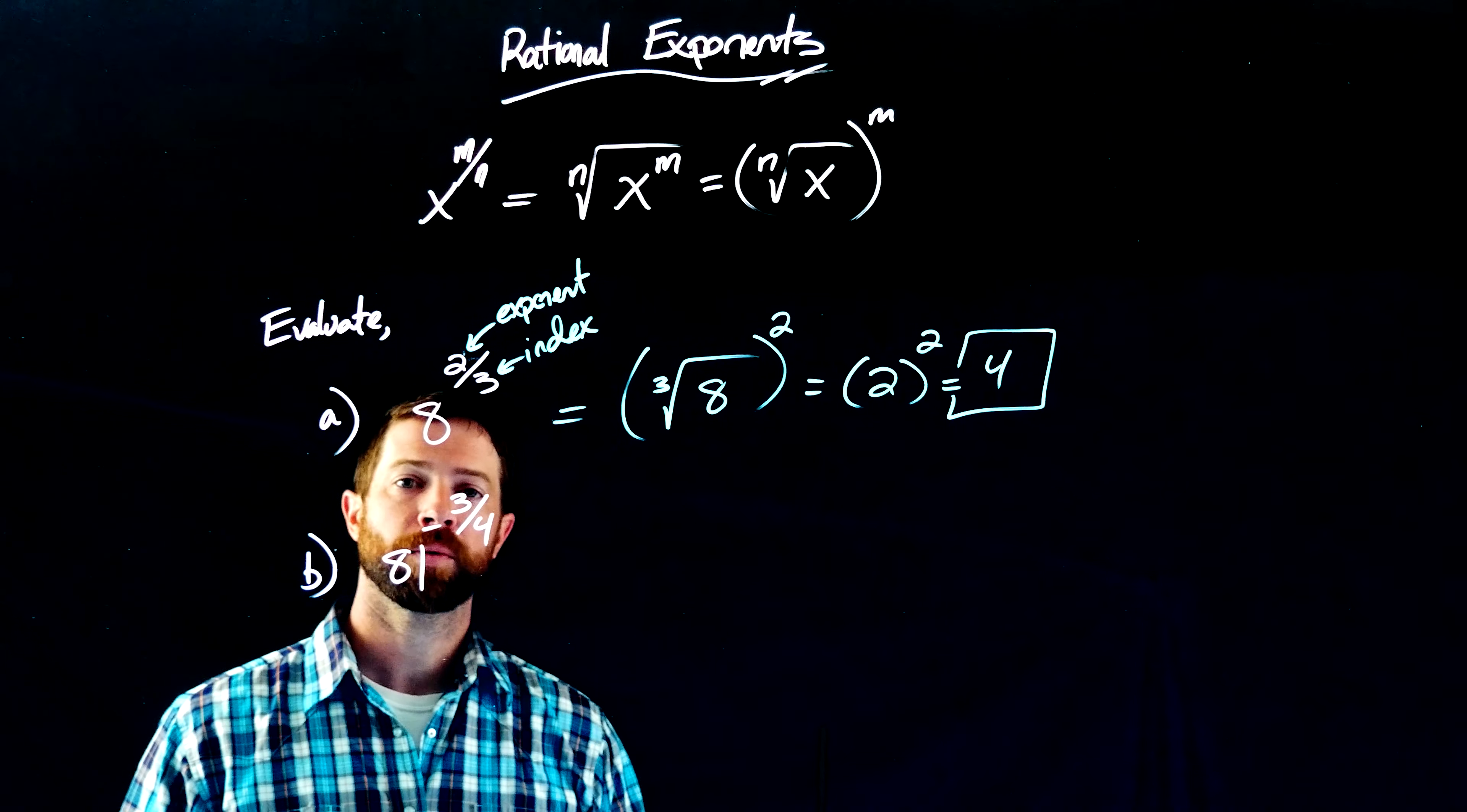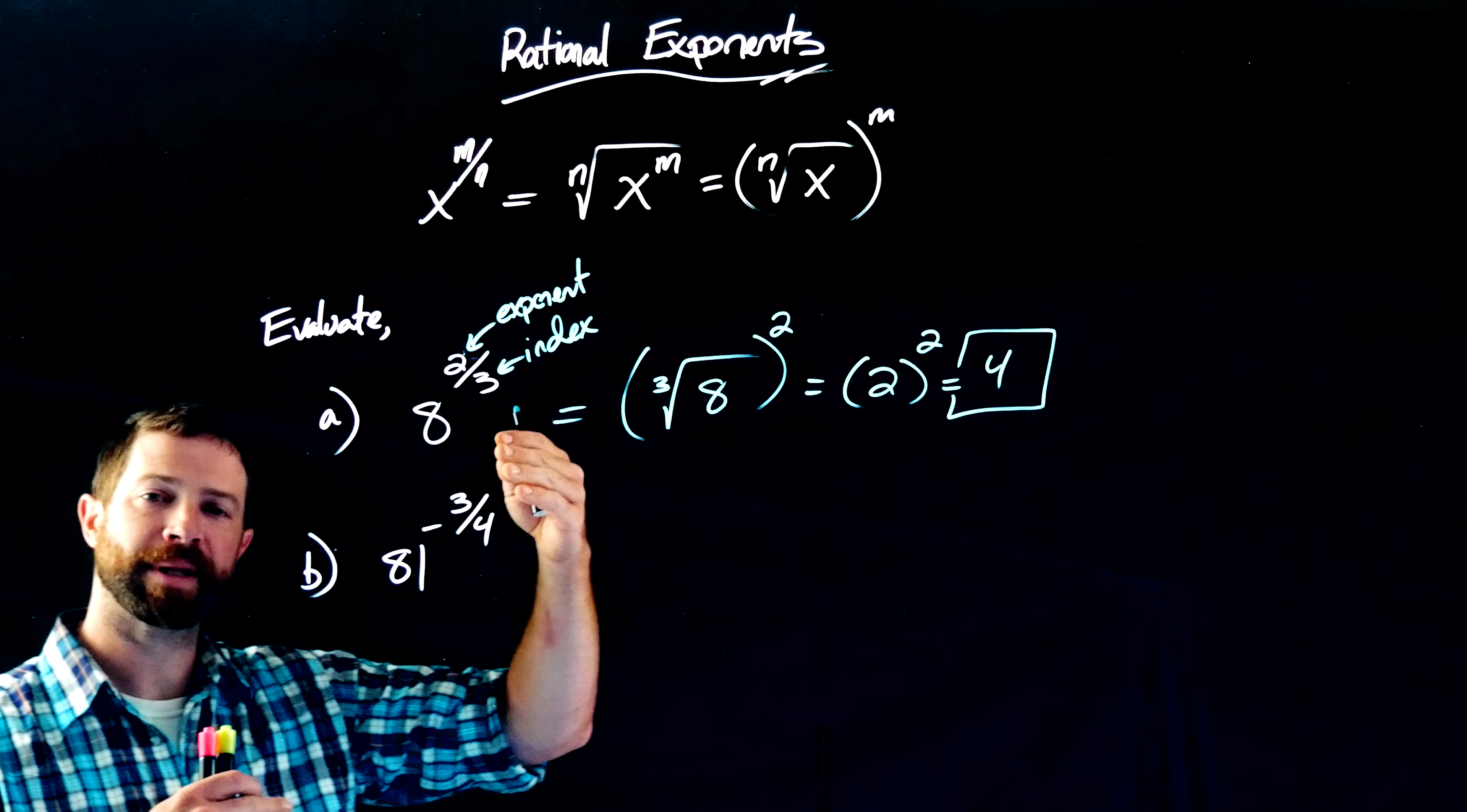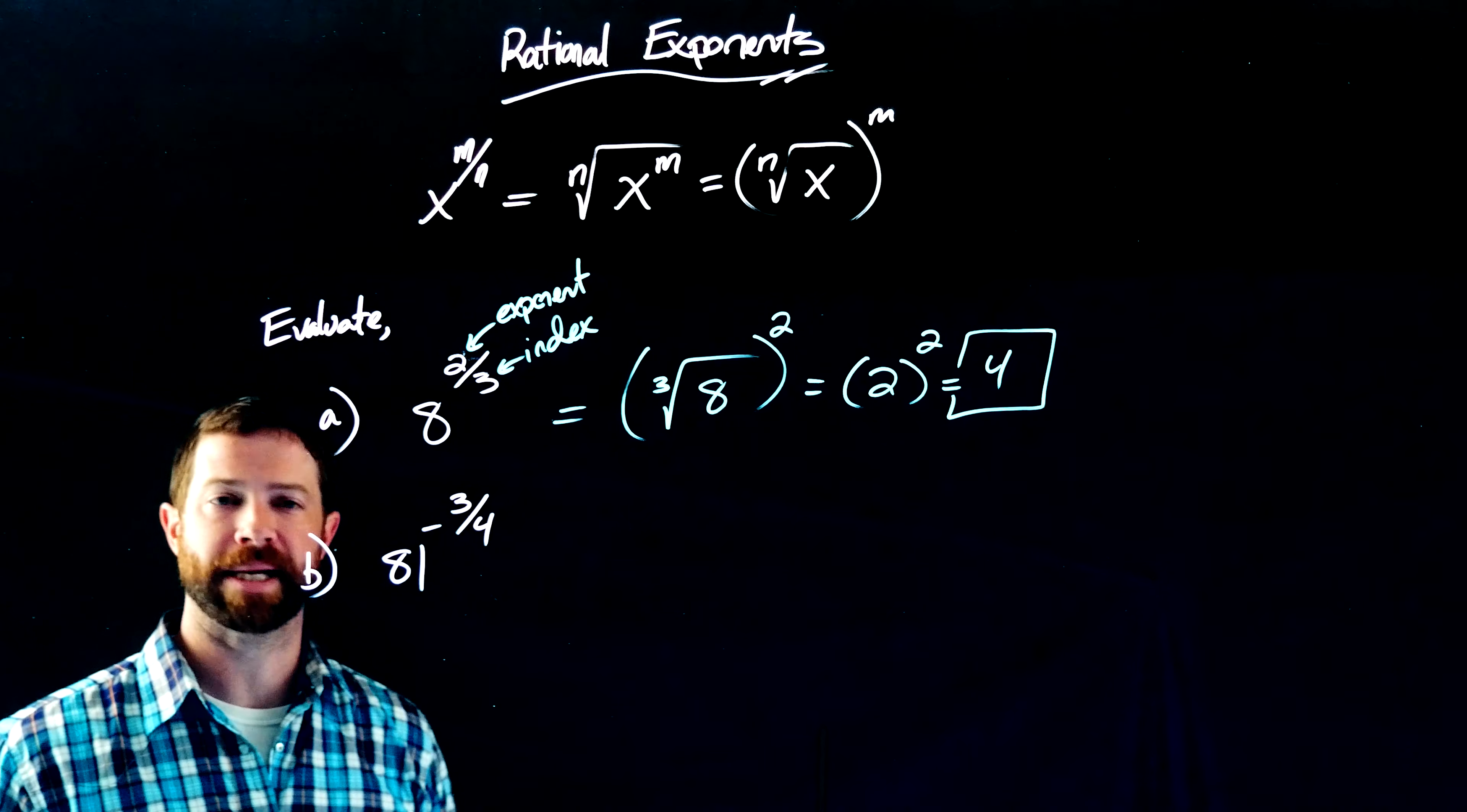It's as straightforward as that. When I see a rational exponent, I'm thinking, oh, there are two operations going on here. There's an exponent that I need to apply and a radical that I need to apply.